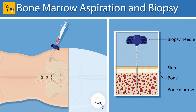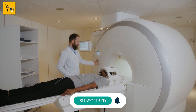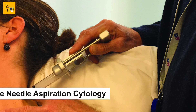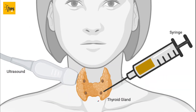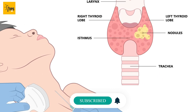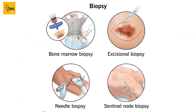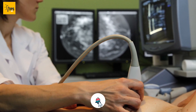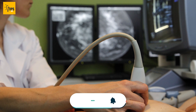It can be a scanner scan. She can also do her function with her own ultrasound scans, CT scans, or MRI scans. She is a fine needle aspiration cytology test. In this case, we are going to use a biopsy to test the thyroid gland.